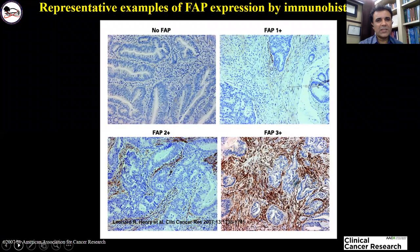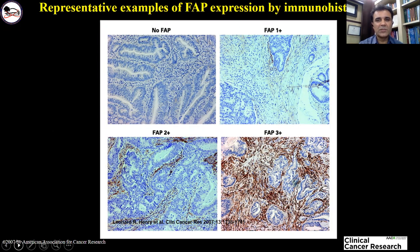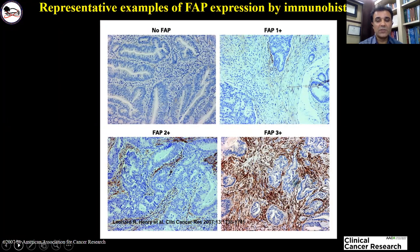Let's take a look at some microscopic evaluation. In this slide from a colorectal in vitro analysis, FAP staining is shown in brown. No FAP means no stromal staining; FAP 1+ means 1–10% stromal staining; FAP 2+ means 11–50% stromal staining; and FAP 3+ means 71–100% stromal staining.